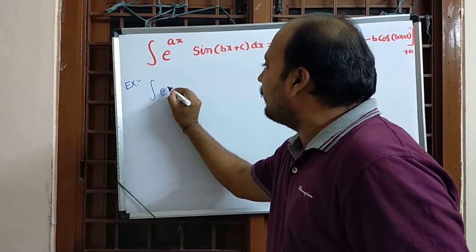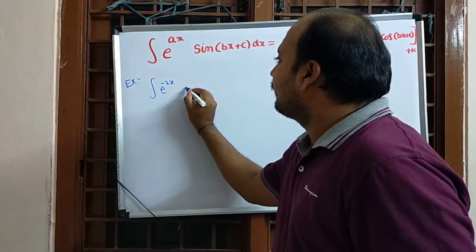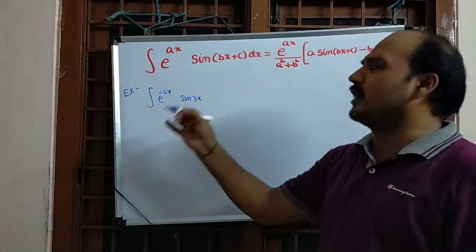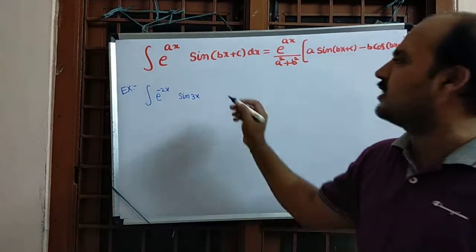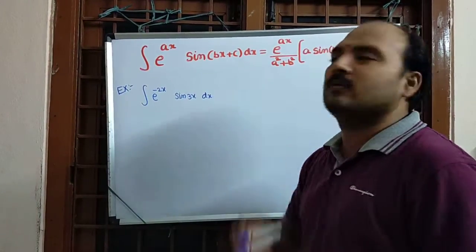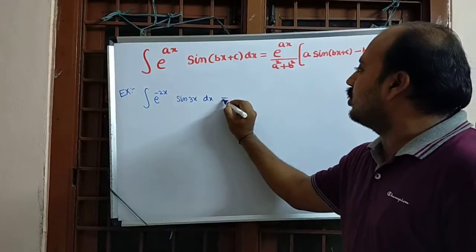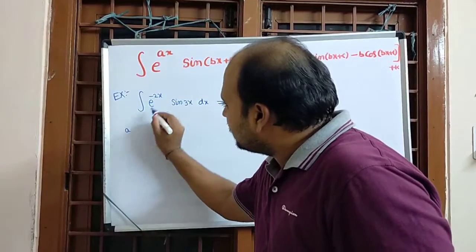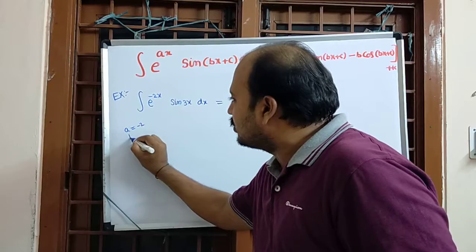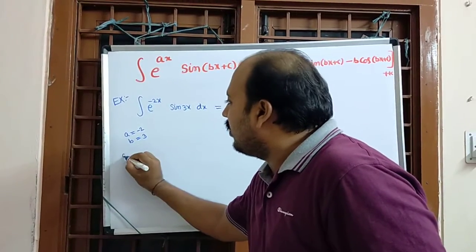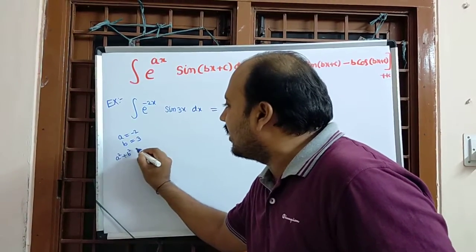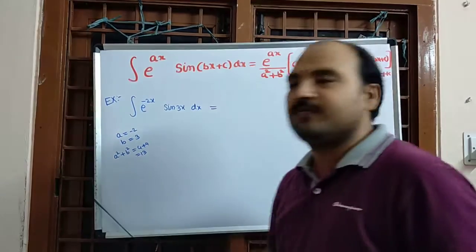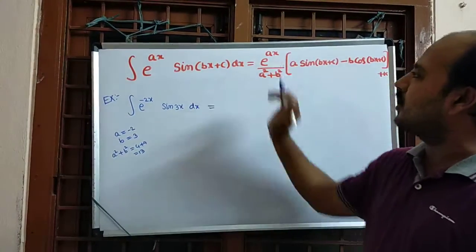Let's take one example: the integral of e^(−2x) · sin(3x + 5) dx. We can apply this formula. First, identify a and b: here a = −2 and b = 3. Now calculate a² + b² = 4 + 9 = 13.